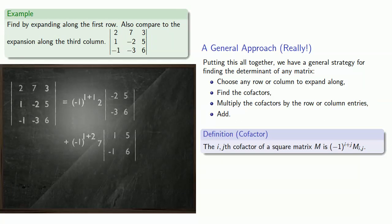And finally, the third entry, 3, is going to be multiplied by the minor, and then multiplied by negative 1 to power 1 plus 3.